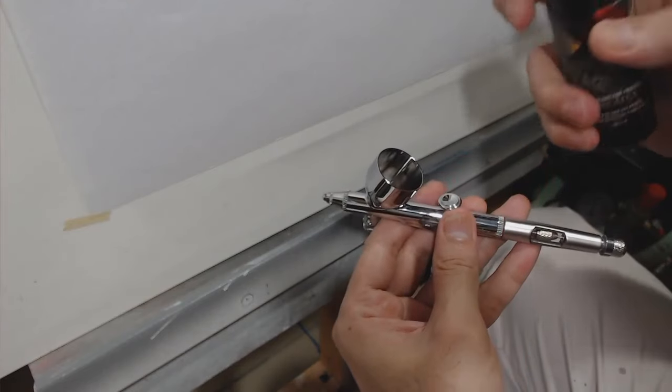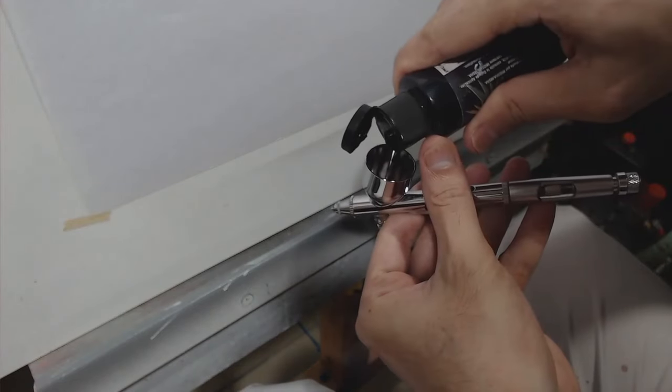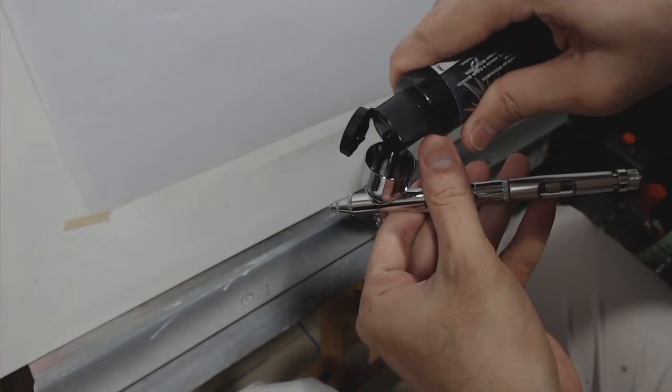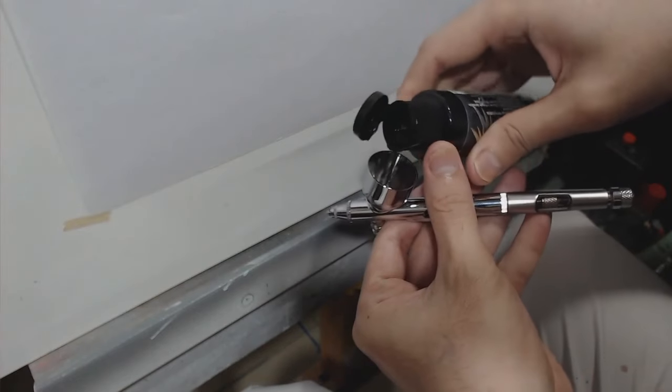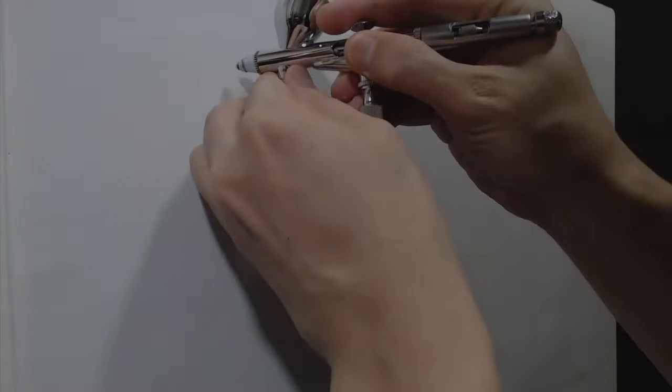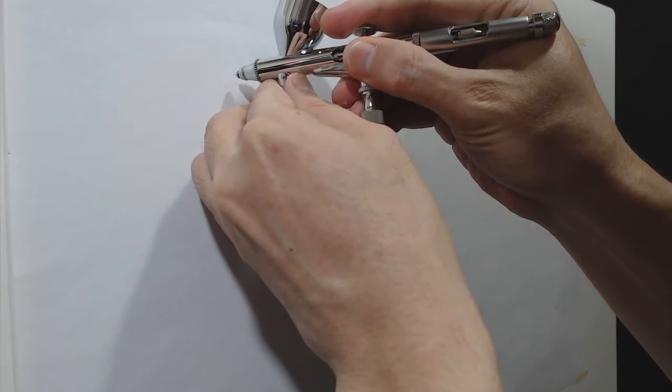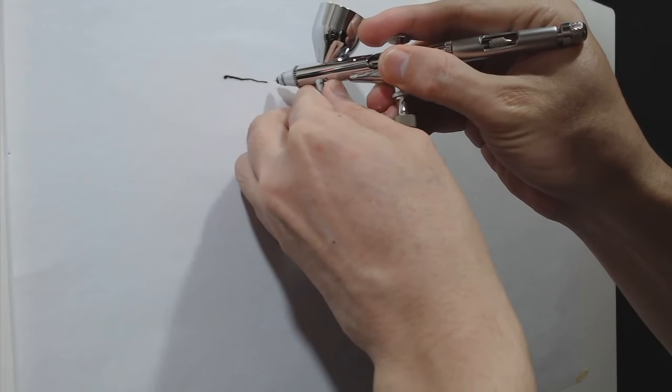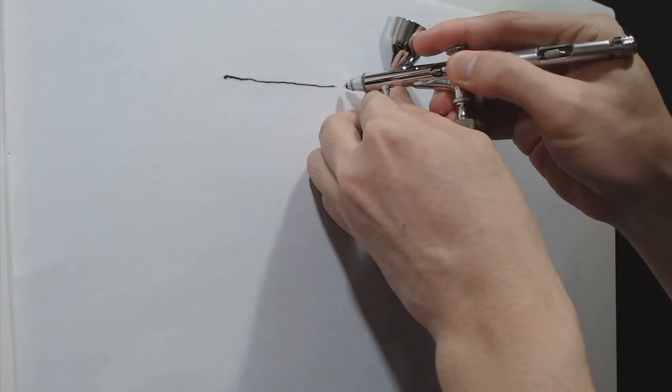I'm going to put four drops of paint directly from the bottle. I'm using Createx Wicked Color. Don't worry if you don't have this paint. This isn't because I use this paint that I am able to do fine lines. I can do the same fine lines using any acrylic paint.